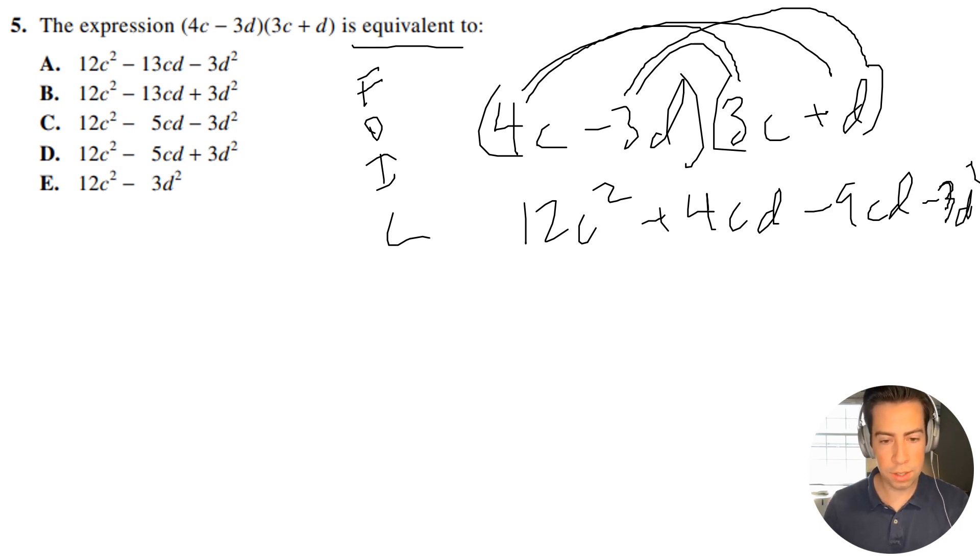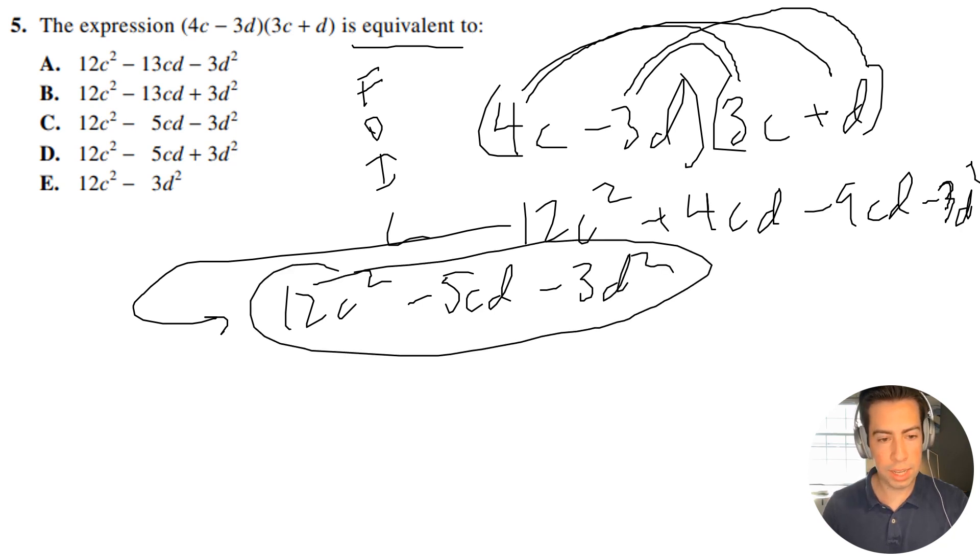So when we simplify that, we're going to get 12c squared minus 5cd minus 3d squared, and that is going to be our answer, that is going to be answer choice C.